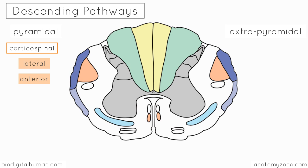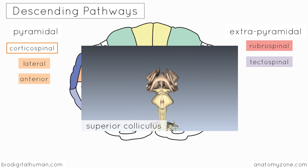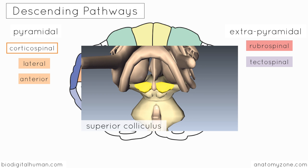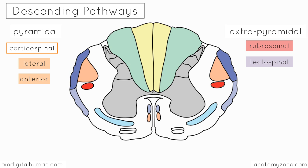Covering some of the extrapyramidal tracts: you've got the rubrospinal tract, highlighted in red, which originates in the red nucleus of the midbrain tegmentum and is responsible for limb flexors. Then you've got the tectospinal tract, highlighted in light purple, seen here intermingled with the medial longitudinal fasciculus. The tectospinal tract originates from the superior colliculus of the midbrain — the 'tecto' part refers to the tectum, which consists of the superior and inferior colliculi. Fibres from the tectospinal tract mainly terminate in the cervical segment of the spinal cord and carry information responsible for movements in response to visual sensory information.